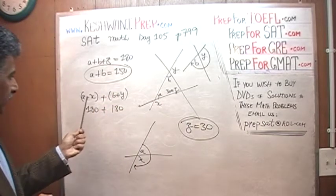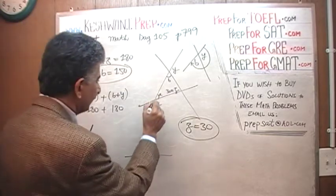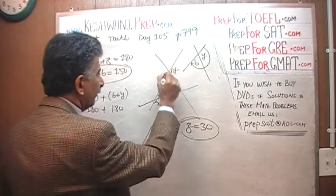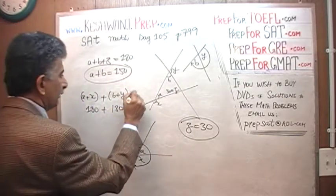This means A plus X equals 180 and B plus Y equals 180. Therefore, A plus X plus B plus Y must equal 360.